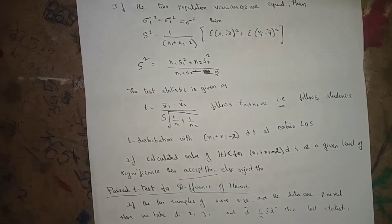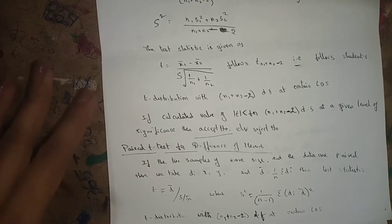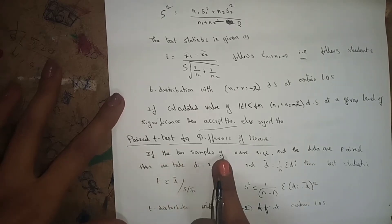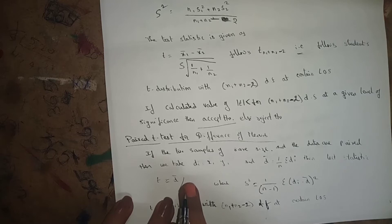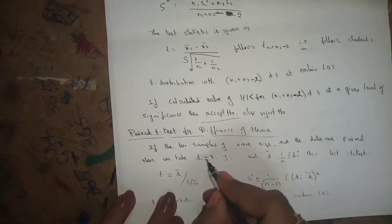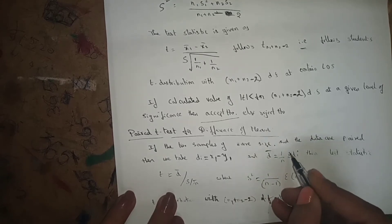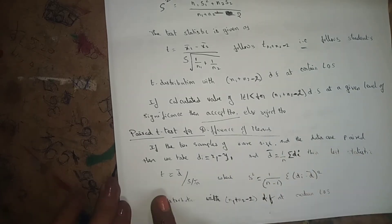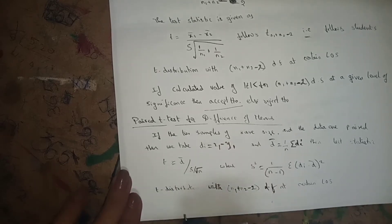Now for the paired t-test for difference of means: if the two samples are of the same size and data are paired, then we take d_i = x1 − y1, and d-bar = (1/n) × Σd_i. The test statistic is t = d-bar / (s / √n).